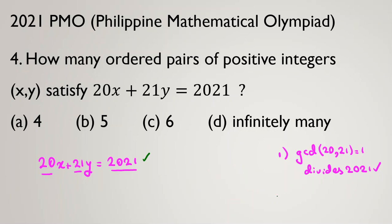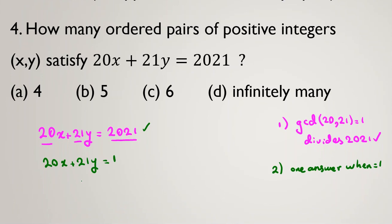Second step. In second step, we should find one answer when it is equal to 1. 20x plus 21y equal to 1. Let's find one answer. If x equal to negative 1 and y equal to 1, 21 minus 20 is 1. So the second step we've done now.